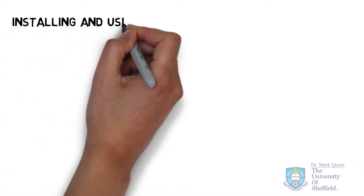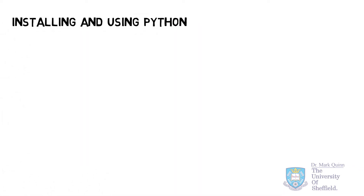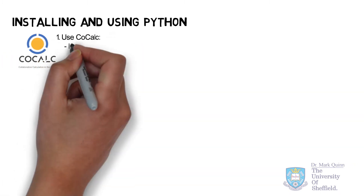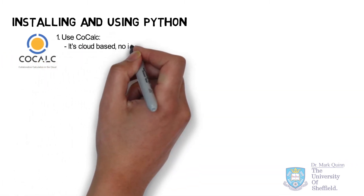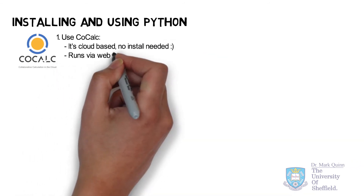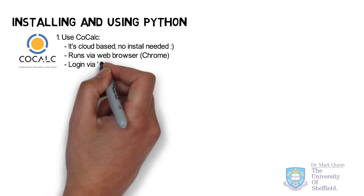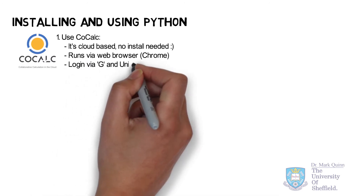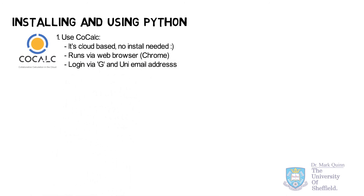Traditionally, in order to start programming, you need to install software for the language that you wanted to use. In our case, we're going to use an online option called CoCalc, which stands for Collaborative Calculation in the Cloud. You don't need to install anything — you just simply open a web browser like Google Chrome and log in with your university email address.